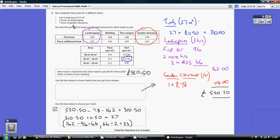And then thirdly, one hour's worth of garden clearance. Well, here's the garden clearance. We're told the first hour is £78. So it's only one hour's worth of that, £78 worth.